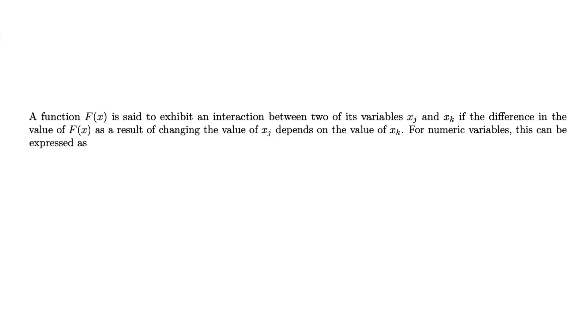Before we get to that, let's formally define an interaction. We take this definition directly from the paper that introduces the H-stat. A function f of x is said to exhibit an interaction between two of its variables, xj and xk, if the difference in the value of f of x, as a result of changing the value of xj, depends on the value of xk.